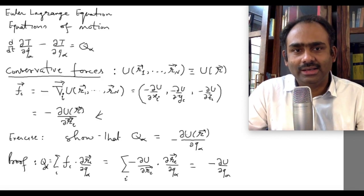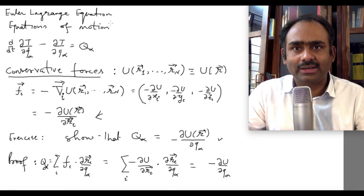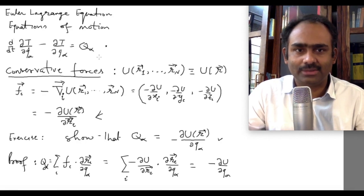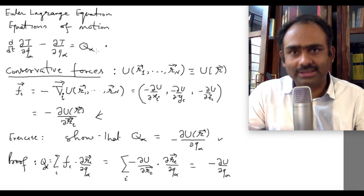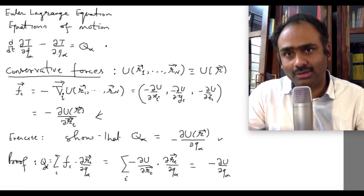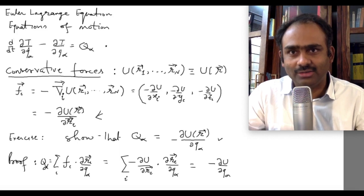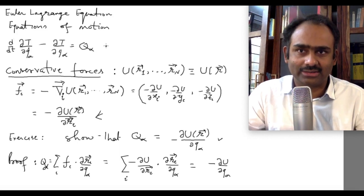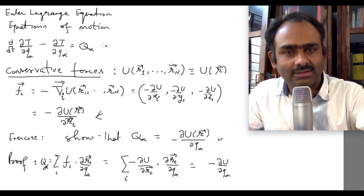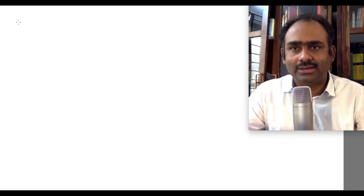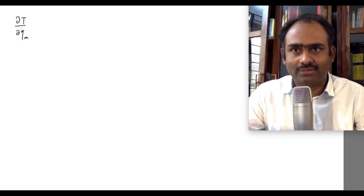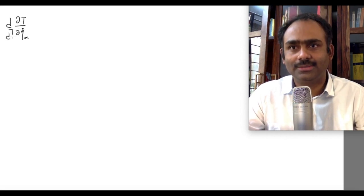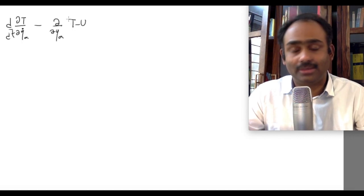So what I will do now is take this result and plug it into the Euler-Lagrange equation. I will bring the derivative of U with respect to q_alpha to the left-hand side and combine it with the ∂T/∂q_alpha term already there. This will become T minus U and the right-hand side becomes 0. So I get: d/dt of ∂(T−U)/∂q̇_alpha minus ∂(T−U)/∂q_alpha equals 0.